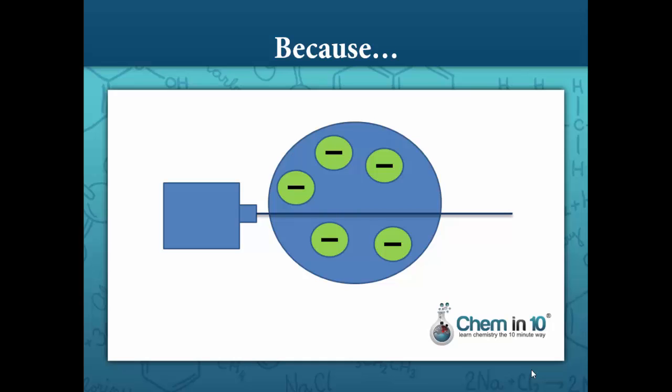Because of this plum pudding model, the positive charge, which alpha particles were also positively charged, was so evenly spread out that there wasn't enough positive charge to repel the positive charge of the alpha particles. Remember that like charges repel. So he expected the alpha particles to go through the foil, but perhaps be deflected a little bit.